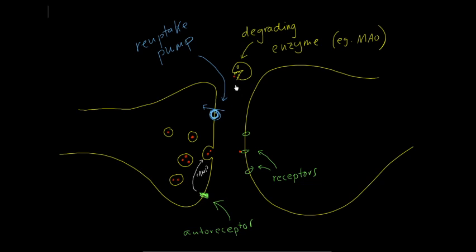Degrading enzymes such as monoamine oxidases. So any of these fates could happen, and so there are different ways in which we can stop this from happening and thereby increase the monoamine neurotransmitter which should cure the depression.